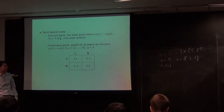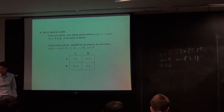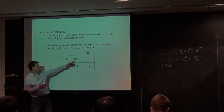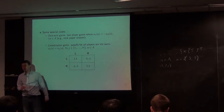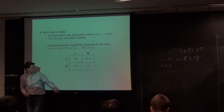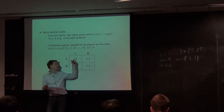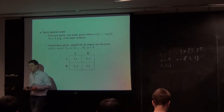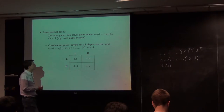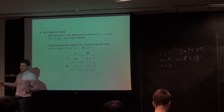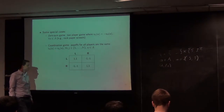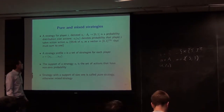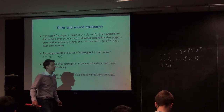A coordination game is a game where the payoffs for each player are always the same for all players. The classic example is the side-of-the-road game: if you drive on the right and I drive on the right, we're both happy; if we both drive on the left, we're still happy. But if you drive on the right and I drive on the left, that's bad for both of us. All that needs to happen is we arrive at a consensus on which side of the road to drive on.